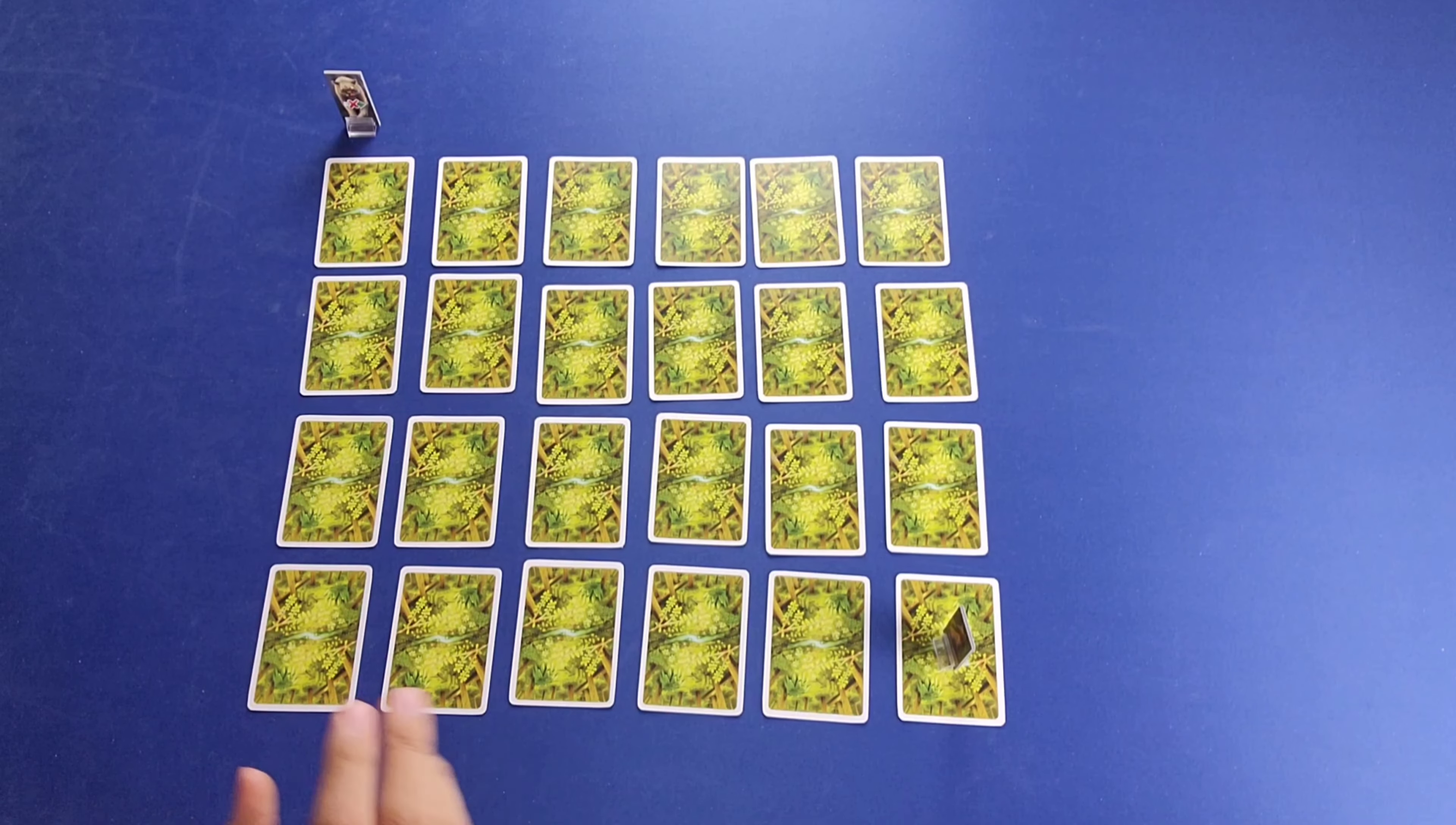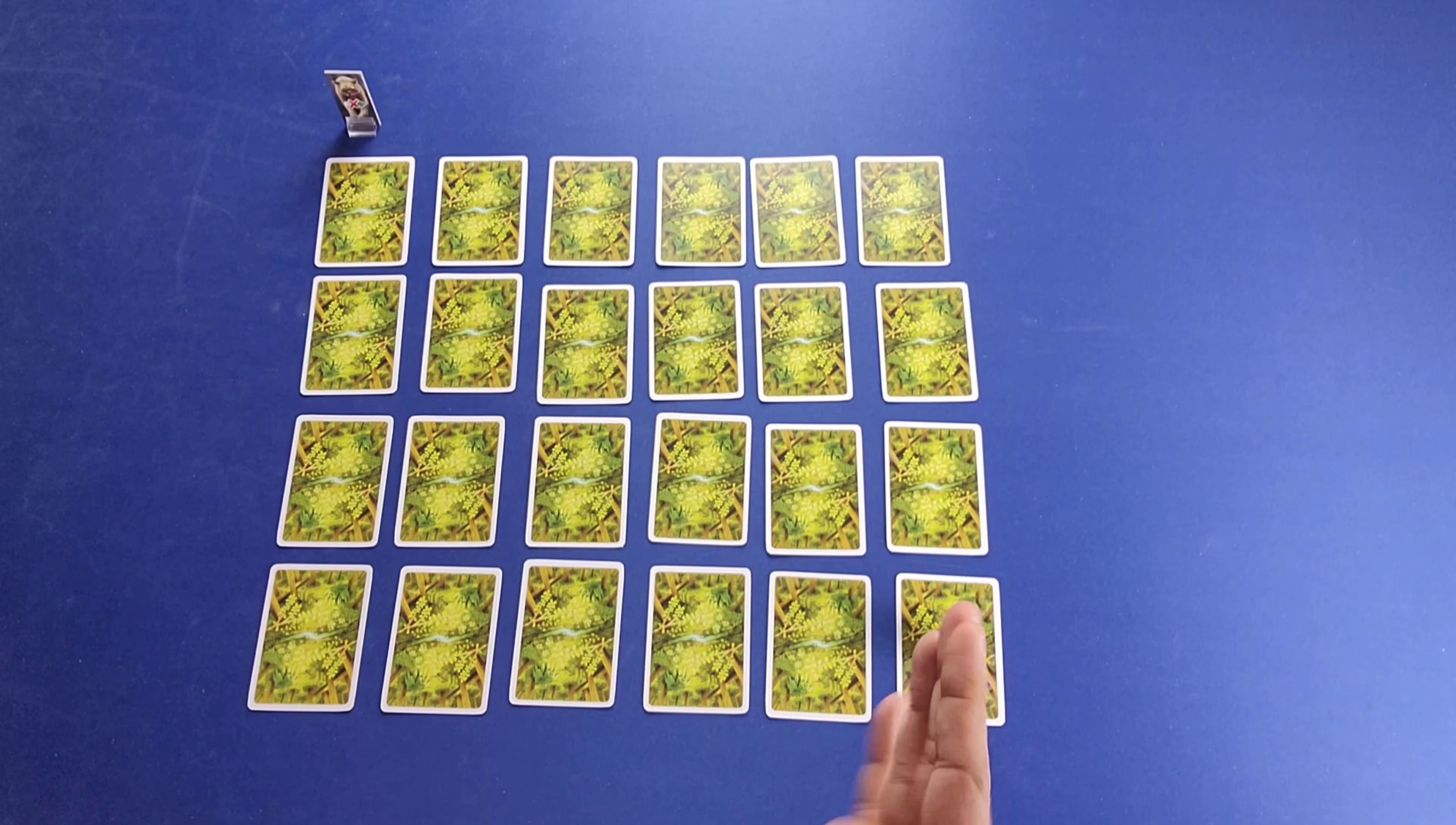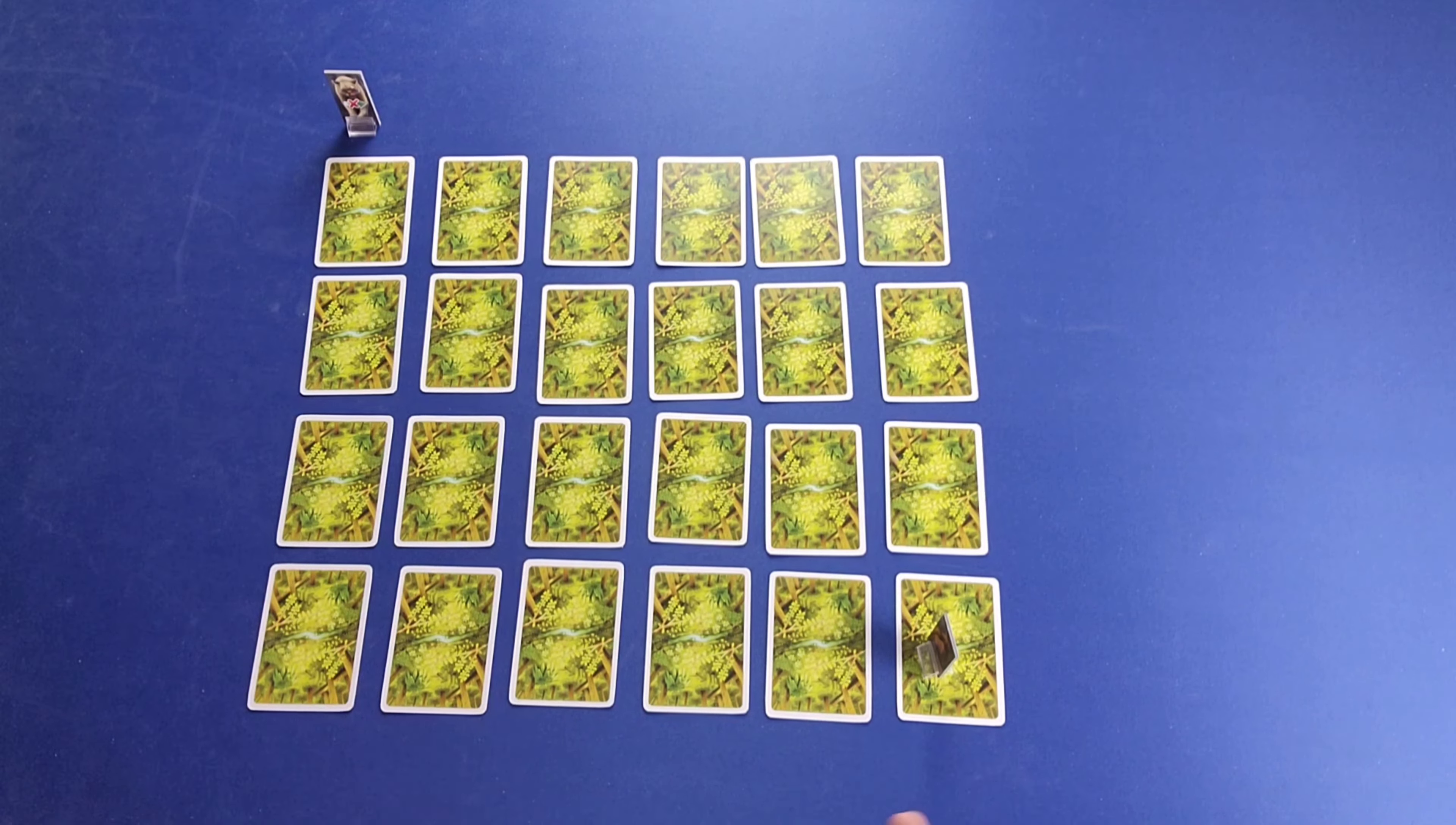On a player's turn, they will start by moving the Red Fox Pawn, or Standee, and there are two options as far as movement is concerned. You can either move your Pawn here, or your Standee, two spaces, any combination of vertical and horizontal movements. There are some restrictions as far as movement is concerned. You can never move diagonally, and you can never end your turn or your movement in the same spot that you began in. There's no way around it. You do have to move your Standee.